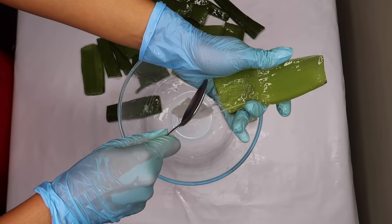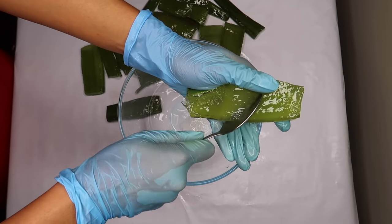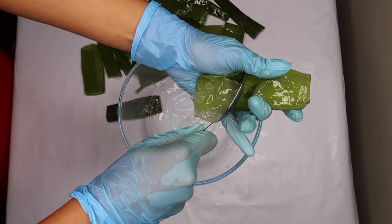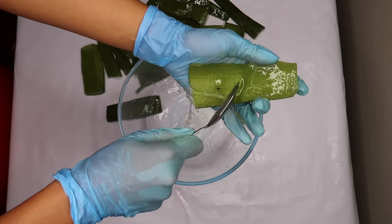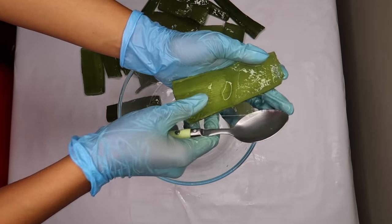Now I remove the gel from all the aloe vera leaf pieces with a spoon and put it into a bowl. You can use a knife to remove the gel, but I found that the use of a spoon is more practical.